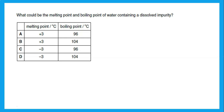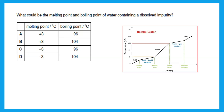What could be the melting point and boiling point of water containing a dissolved impurity? If we have impure ice, impurities lower the melting point, so it should melt at a temperature lower than zero — for example, minus three. What about its boiling point? Pure water boils at 100, but impurities increase the boiling point. So instead of 100, impure water will boil at 104. The answer is a melting point of minus three and a boiling point of 104.